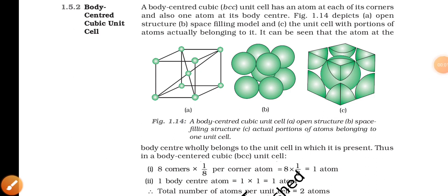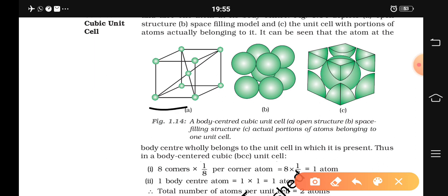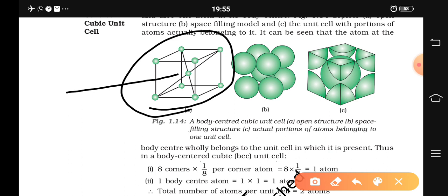Today we'll be trying to understand how to calculate the number of atoms per unit cell in a body centered cubic unit cell. A body centered cubic unit cell has an atom at each of its corners and also one atom at its body center, which is shown clearly in the figure. You can clearly see the center atom and the other eight corner atoms.